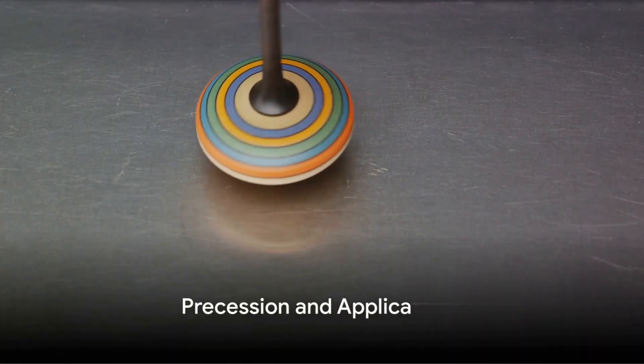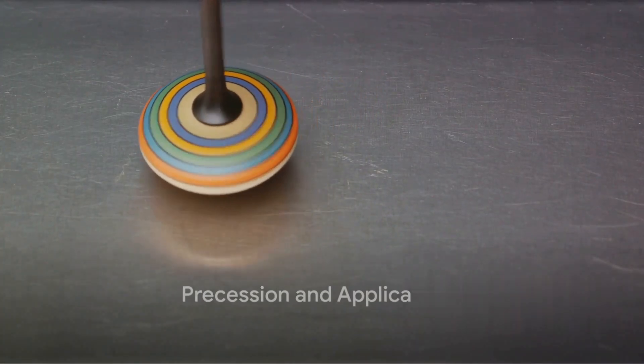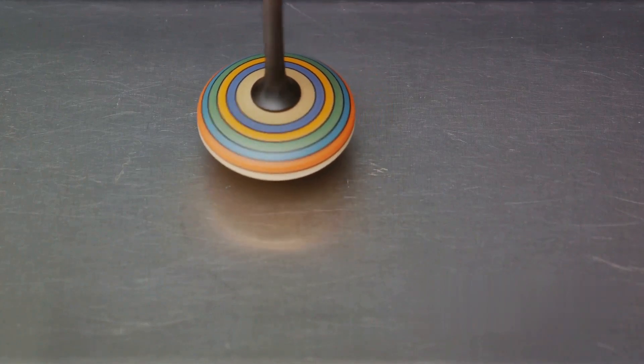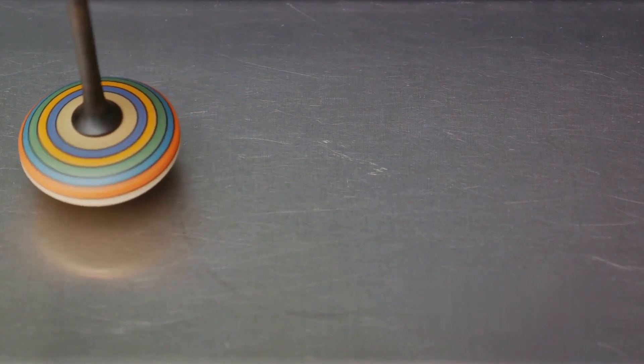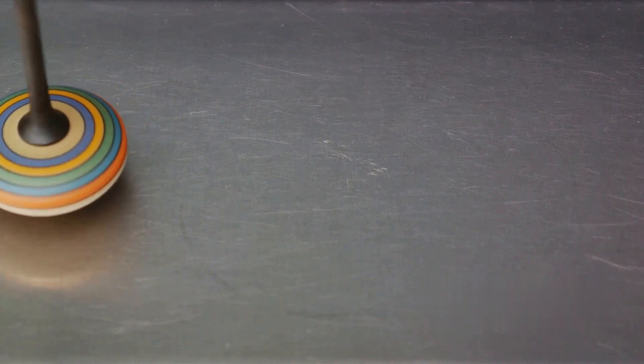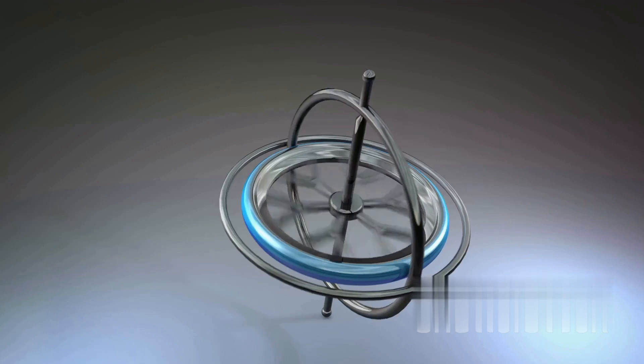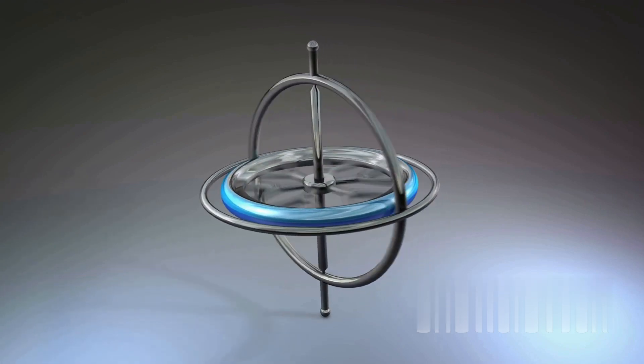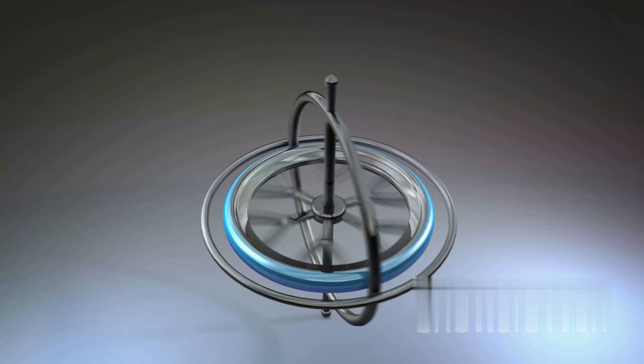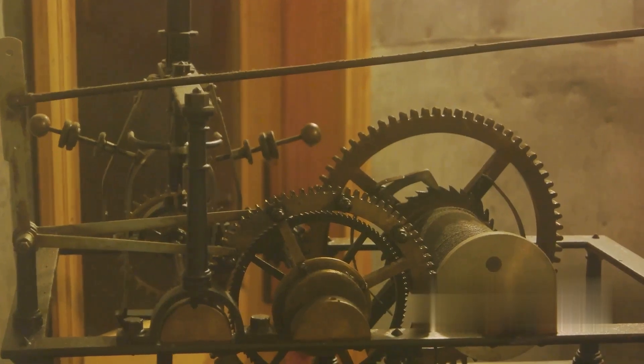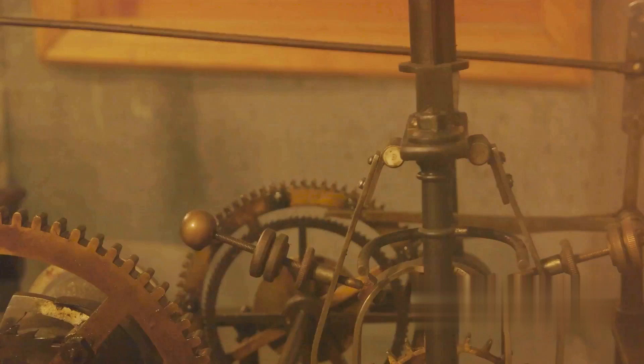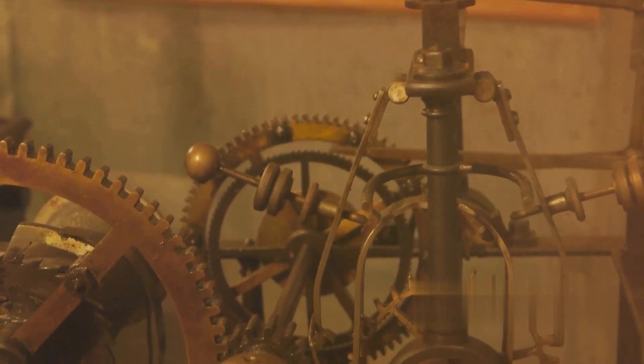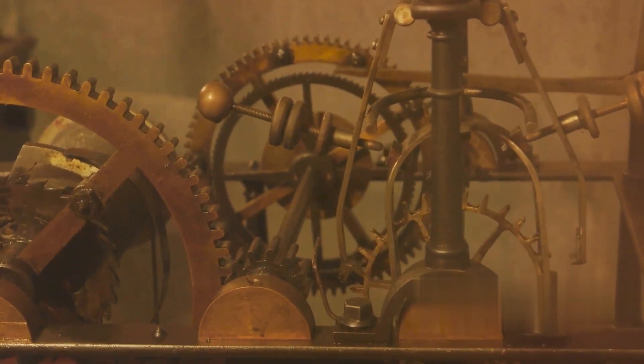One of the most captivating behaviors of a gyroscope is precession. This phenomenon sees the axis of rotation of a spinning gyroscope rotate in response to an external force applied perpendicular to its axis. Imagine applying a horizontal force to the side of the spinning disk. The gyroscope's axis will start to rotate perpendicular to the direction of the applied force. This fascinating behavior is the result of the conservation of angular momentum, where the gyroscope responds to the force by rotating around a different axis.